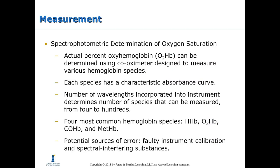The spectrophotometric determination of oxygen saturation: the actual percent of oxyhemoglobin can be determined using a co-oximeter designed to measure various hemoglobin species. Each species has a characteristic absorbance curve, and the number of wavelengths incorporated into the instrument determines the number of species that can be measured — from four to hundreds, with four being the most common. Potential sources of error include faulty instrument calibration and spectrally interfering substances.